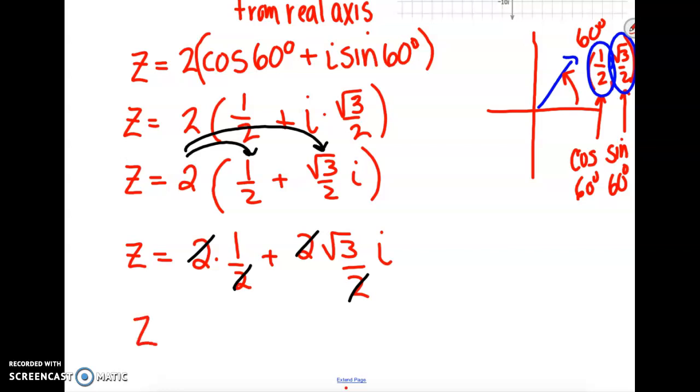So our complex number in rectangular form is 1 plus the square root of 3i. Remember z equals a plus bi. This is our a value and this is our b value.